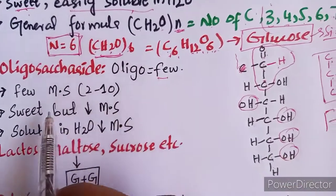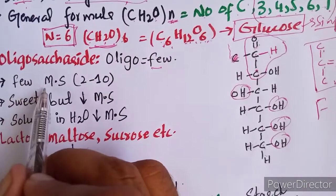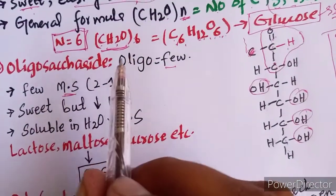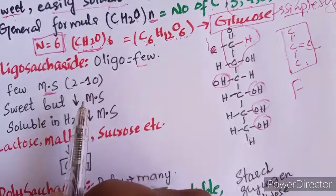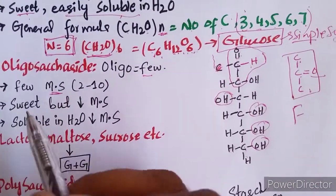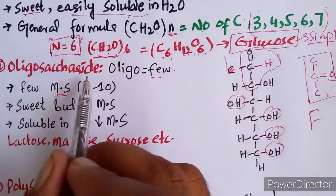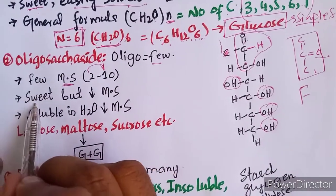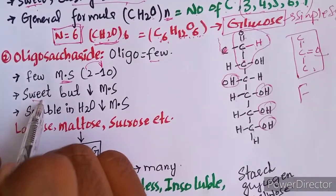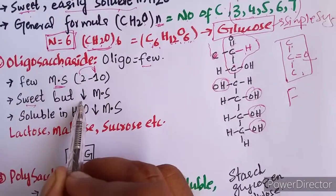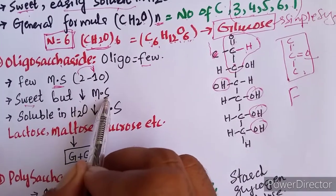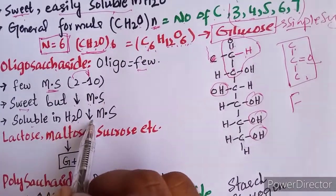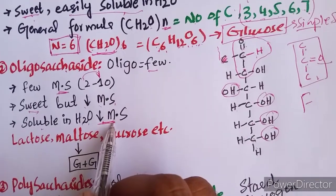The definition of oligosaccharides is: those carbohydrates which consist of few monosaccharides — from 2 up to 10 monosaccharide units joined together. Oligosaccharides are also sweet in taste, but less sweet than monosaccharides. They are soluble in water, but less soluble compared to monosaccharides.